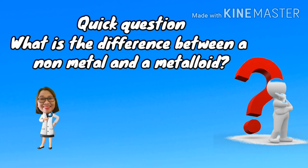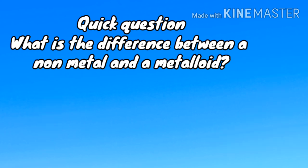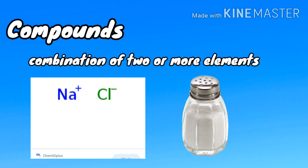Quick question: what is the difference between a non-metal and a metalloid? Compound is a combination of two or more elements. For example, if you combine sodium and chlorine, you will end up with salt, or sodium chloride.